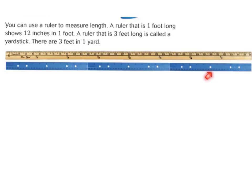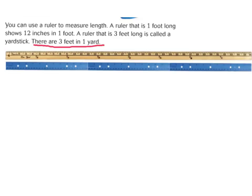If you look, three of our rulers — each equal to 1 foot — give us 1 foot, 2 feet, and 3 feet, which is equal to 1 yard. So 1 yard equals 3 feet, and there are 12 inches in 1 foot. That's very important to remember: 3 feet in 1 yard, and 12 inches in 1 foot.